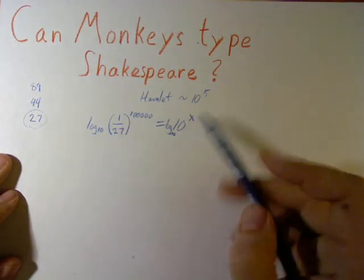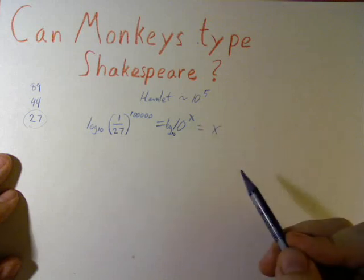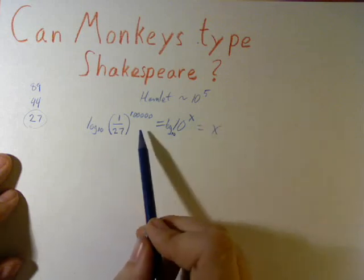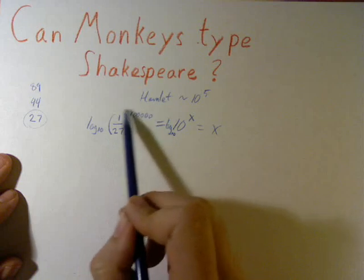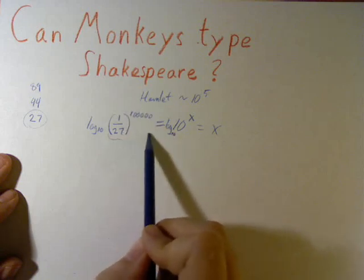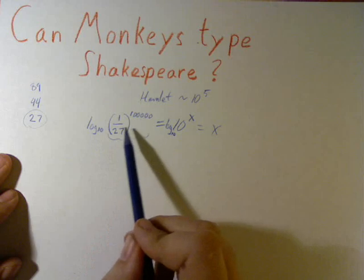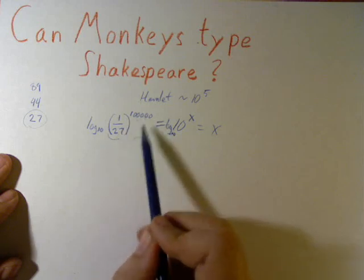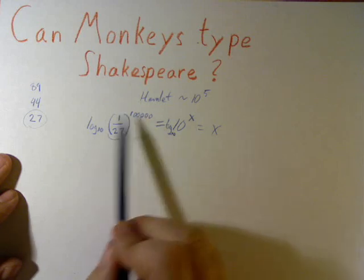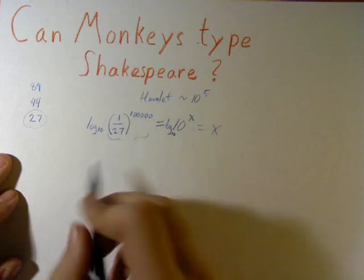And we can solve for x. Now, the wrong way to solve this is to plug this part into your calculator and then take the log. Your calculator will choke on that and just give you a 0. We want to simplify this first using our logarithm rules.